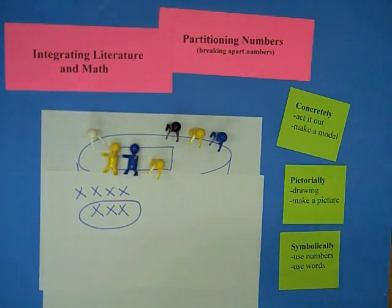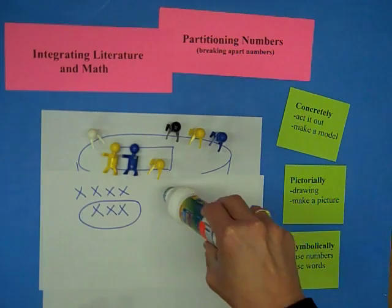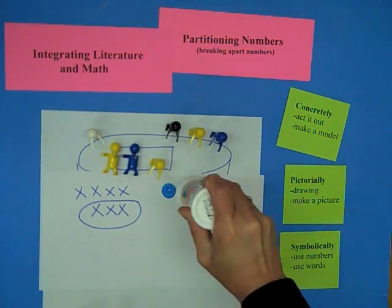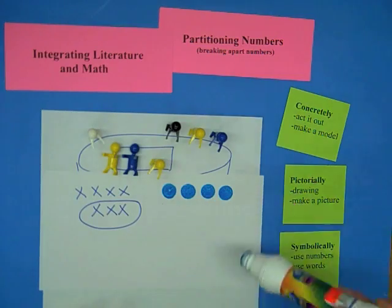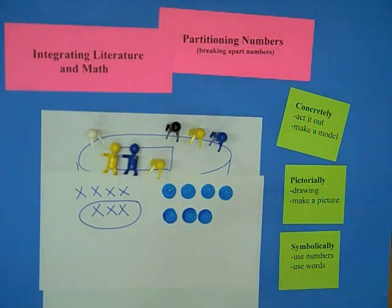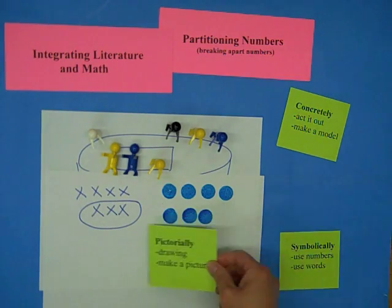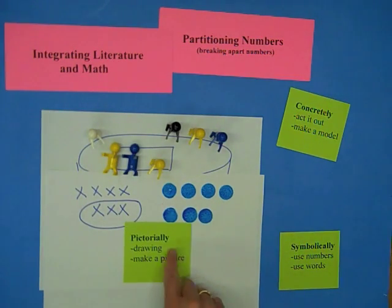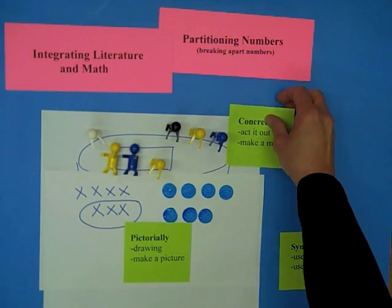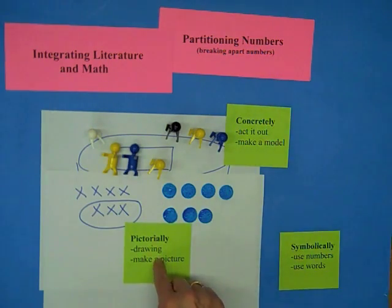Okay. I could have them show me with a bingo dabber. Here are the four on the outside of the tub. Here are the three on the bar of soap. So, now we've taken it into the pictorial. We want a picture. What does it look like? This is the concrete. Now, we have a picture.